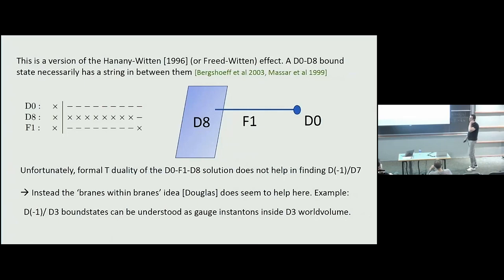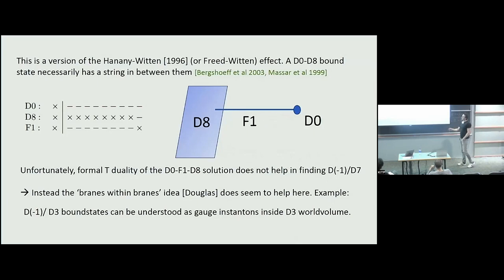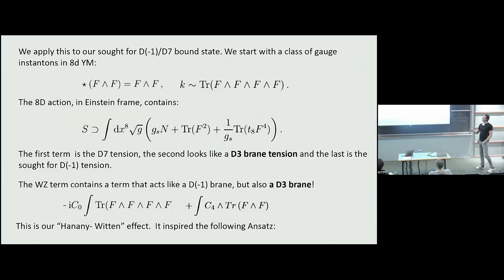You could ask: why not take one of the supergravity solutions and T-dualize to get the D(-1)-D7 system? For technical reasons I can't explain now, this doesn't work. We were nonetheless obsessed with trying to find such a supergravity solution. What we used instead was the 'branes within branes' idea. For example, to understand the D(-1)-D3 solution, you can think of the D(-1) branes as a bunch of gauge instantons inside the D3 worldvolume. We applied the same idea to the D(-1)-D7 bound state: the D7 worldvolume is 8-dimensional super Yang-Mills, and I look for supersymmetric instantons from the self-duality equation.